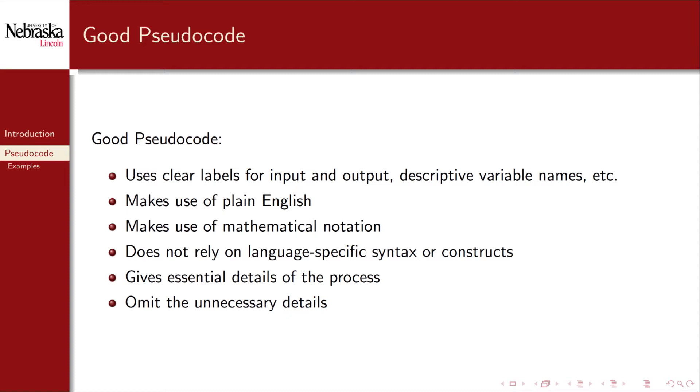Good pseudocode clearly labels the input and output and uses descriptive variable names similar to good coding style guidelines. Unlike code however you can make good use of plain old English. After all pseudocode is intended to be read and understood by humans not machines. You can and should utilize standard mathematical notation when appropriate. Good pseudocode does not rely on any language specific syntax or constructs. It gives the essential and necessary details of the process. Enough so that a competent programmer could translate your pseudocode to a high-level programming language that they're already familiar with. Good pseudocode also omits unnecessary details. Anything from variable declarations to full data structure implementations.